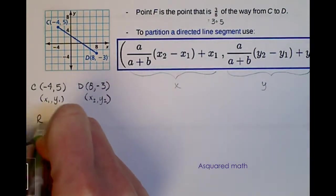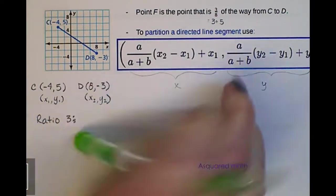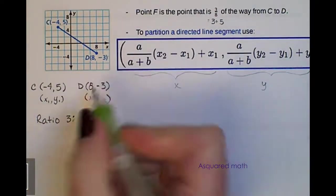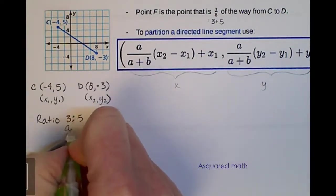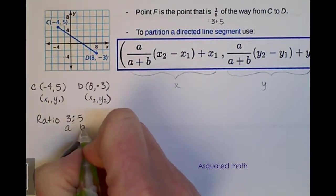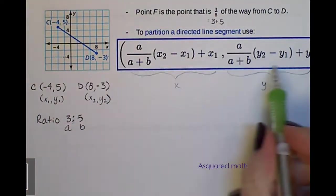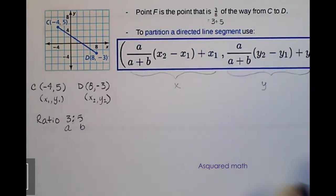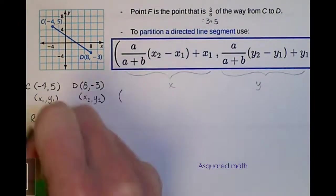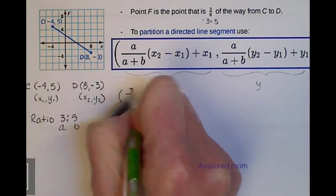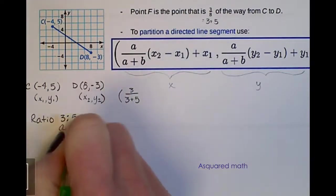Our ratio is 3 to 5. And these are our a and b values. So a is 3, b is 5. And I'm just going to plug all of these numbers into this equation here. So starting over here, a is 3 over a plus b. So I have 3 plus 5. That's my ratios there.